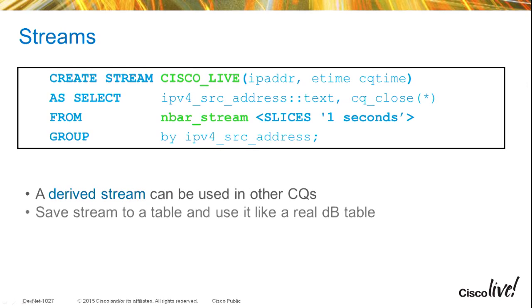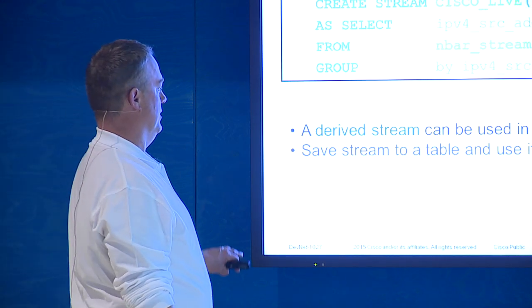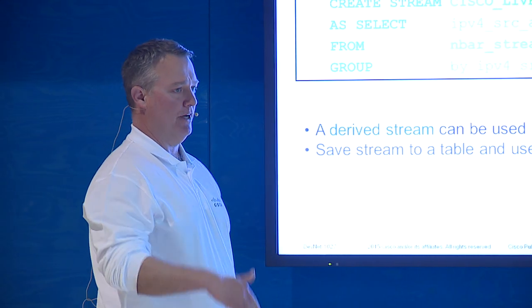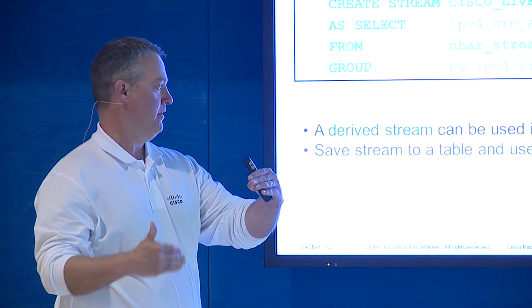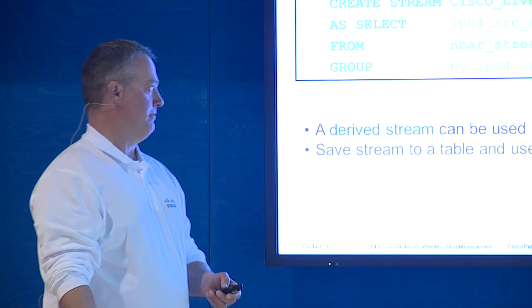Here's an example of creating a stream — called 'Cisco Live' in this case. If I wanted to query for the source IP address and close the connection, notice this is from the NBAR stream — our deep packet inspection or NBAR2 data. This is known as a derived stream: you can create a stream and pull data out of another stream underneath it.